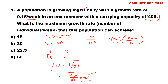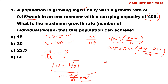Now we know the values of r, K, and N. We can calculate the growth rate: dN/dt = 0.15 × 200 × (400 − 200) / 400. After solving, we get 15. So the maximum growth rate is 15, and the answer is option A.